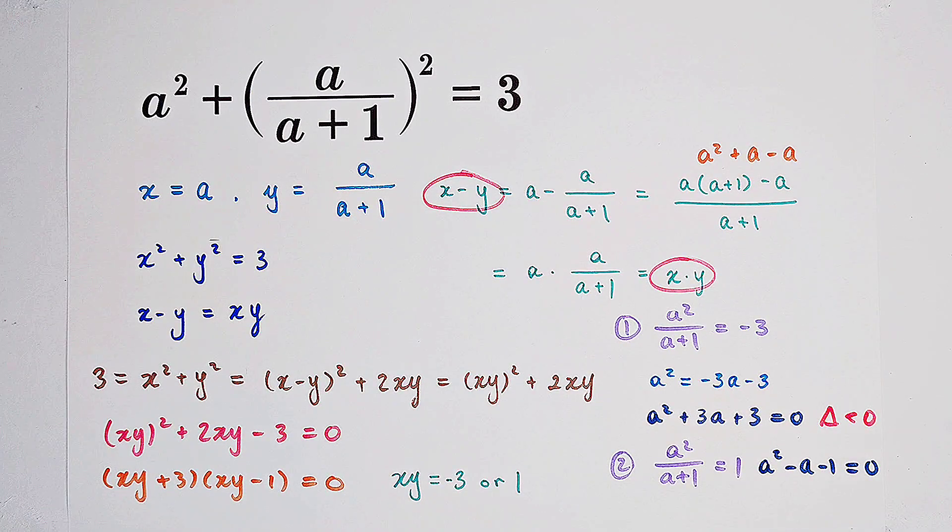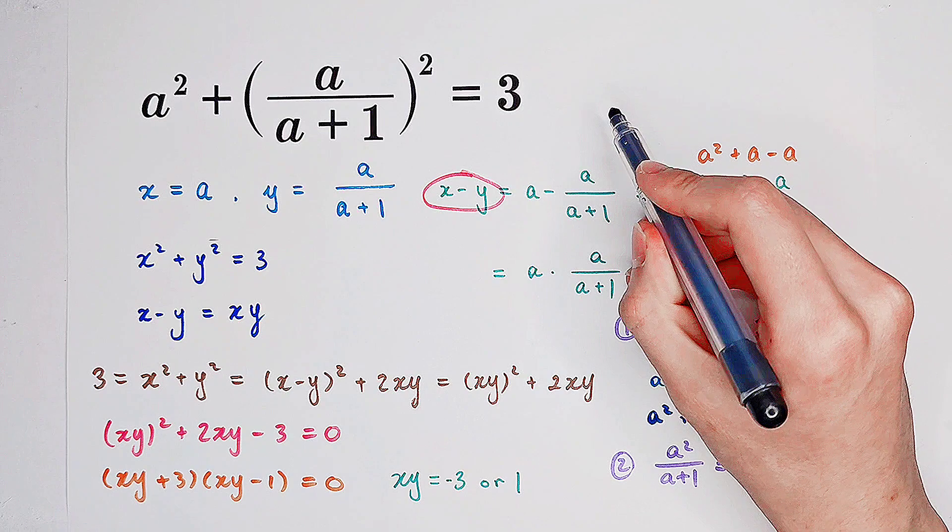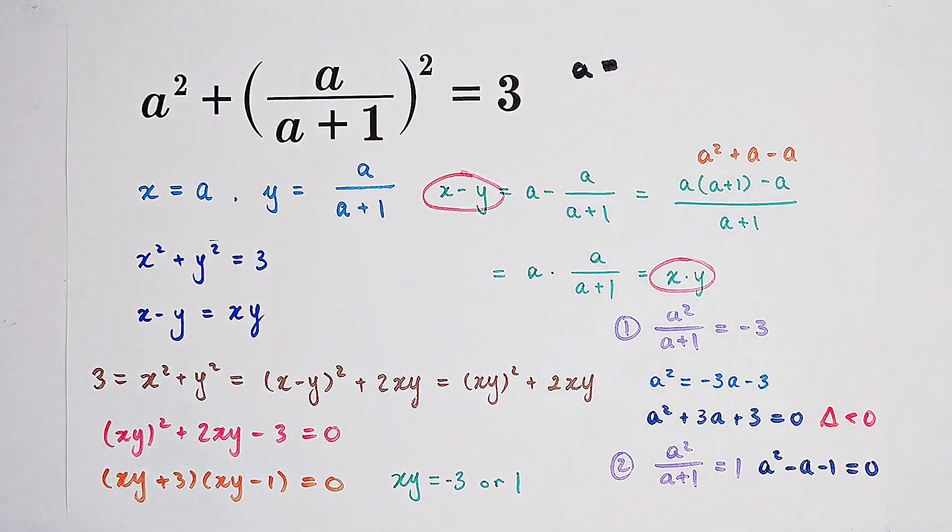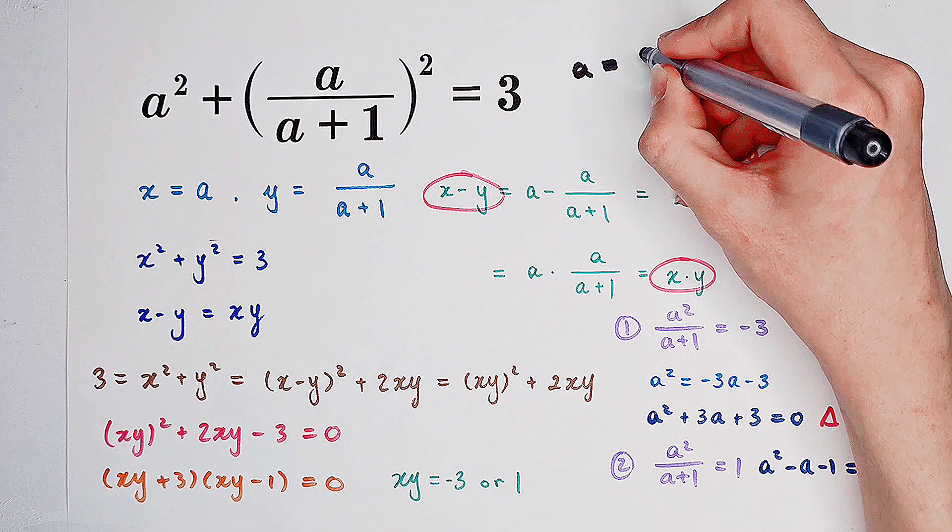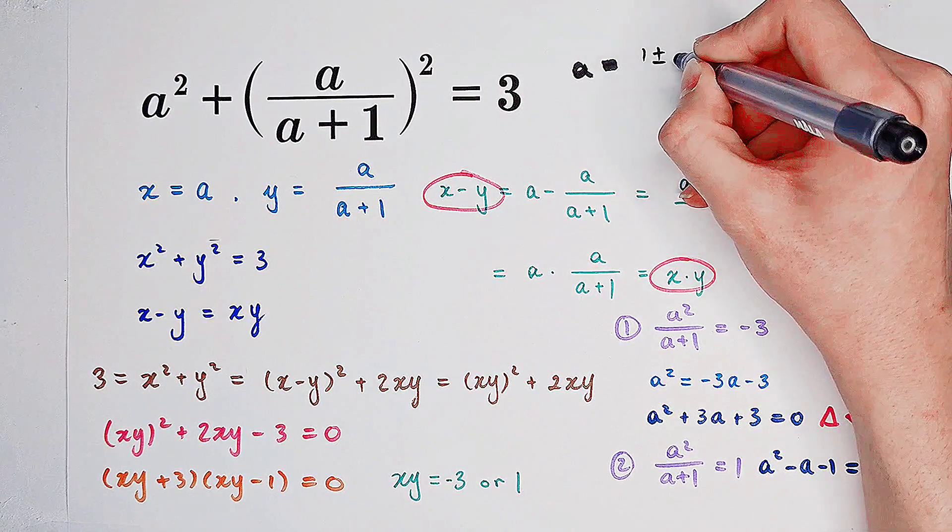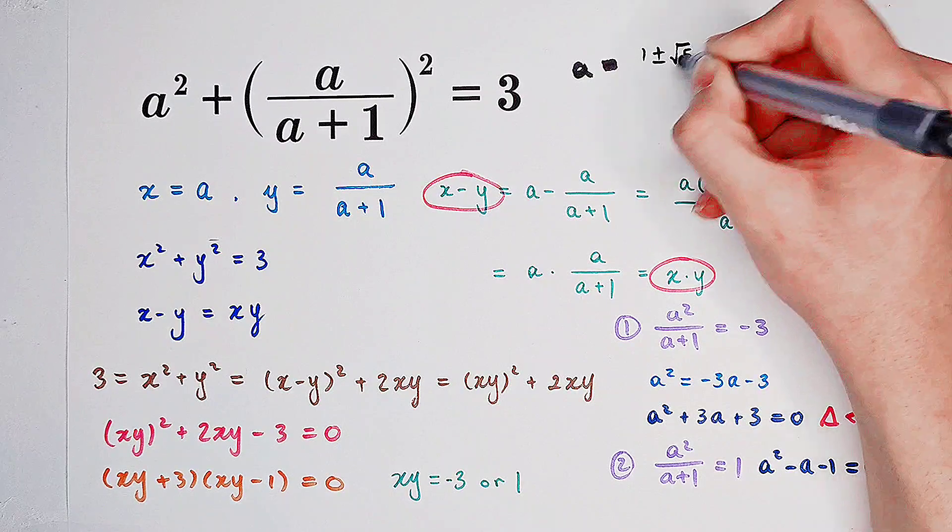It has two fantastic solutions. The first one is 1 plus square root of 5 over 2. And the second one is 1 minus square root of 5 over 2.